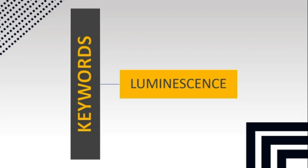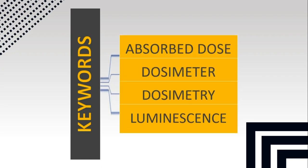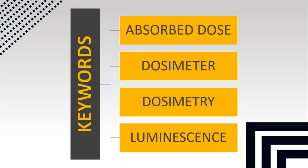Starting with some basic terminologies that we must have an idea about before moving ahead. Absorbed dose is the amount of energy deposited per unit mass of an object, either a human tissue or a material.